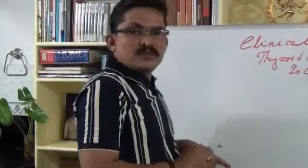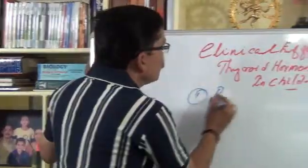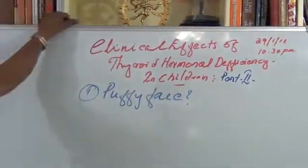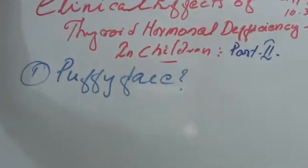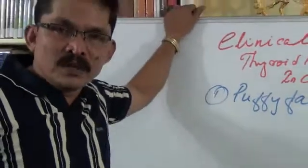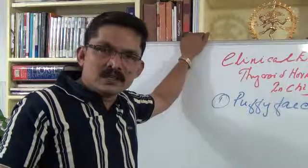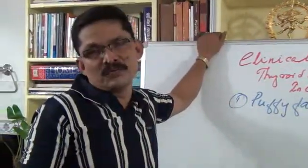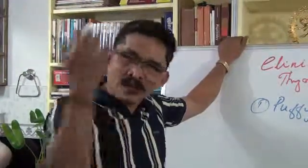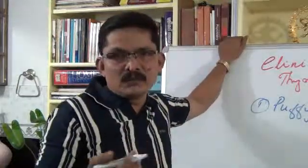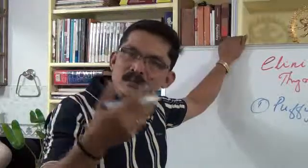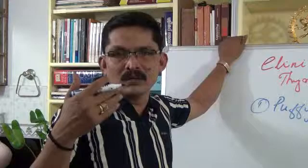The puffy face can be misdiagnosed as a case of nephrotic syndrome or a renal problem. However, it is not due to any defect in the renal system. The puffiness or bloatedness of the face is due to the deposition of mucopolysaccharides and hyaluronic acids along with water molecules, causing the moon face appearance. Because of this misdiagnosis, clinicians may prescribe diuretics in relation to upper, lower, or entire eyelid edema, but it is actually a thyroid case.